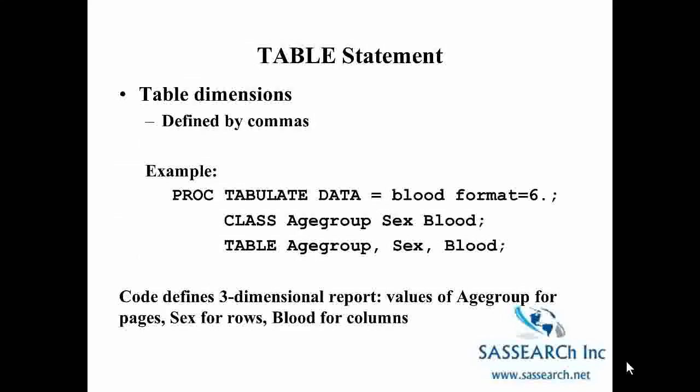So let's focus a little more on the TABLE statement. Table dimensions are defined by commas. So here is some example code where we have three categorical variables: age group, gender, and blood. And we have a TABLE statement with two commas. This code defines a three-dimensional report. The values of age group are considered the pages, gender are the rows, and blood is the columns.